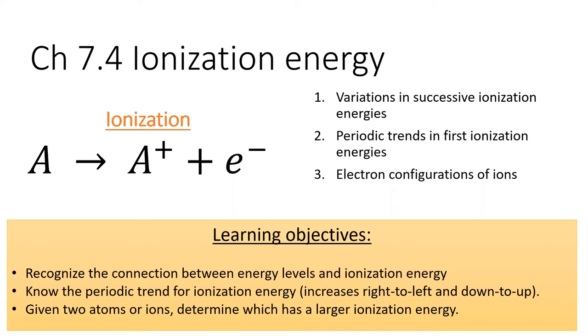Ionization creates ions. More specifically, ionization is the removal of an electron from an atom. The energy required to remove an electron is intimately related to the electronic structure of the atom.